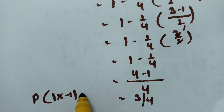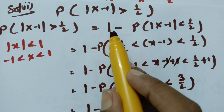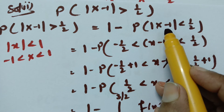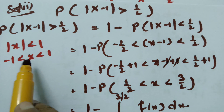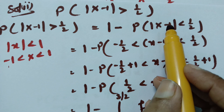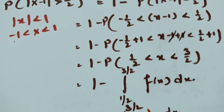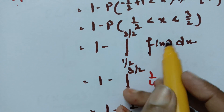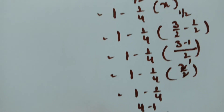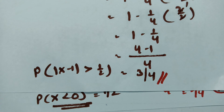Therefore, the probability of modulus of x minus 1 greater than half is 3 by 4. For greater than value, instead of finding it directly, I subtracted from 1: 1 minus probability of modulus of x minus 1 less than half. Since mod x minus 1 less than half means x lies between half and 3 by 2, and the function value is 1 by 4, after calculating we got the probability as 3 by 4. Thank you so much for watching.